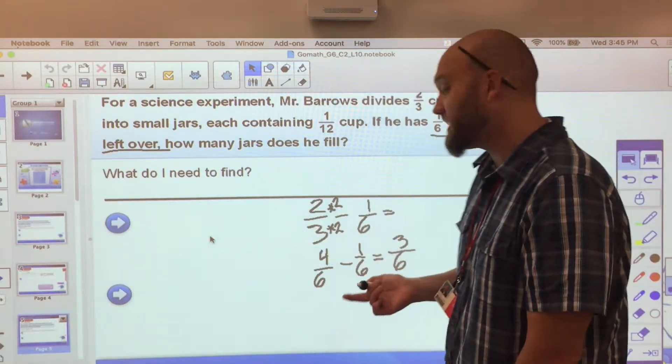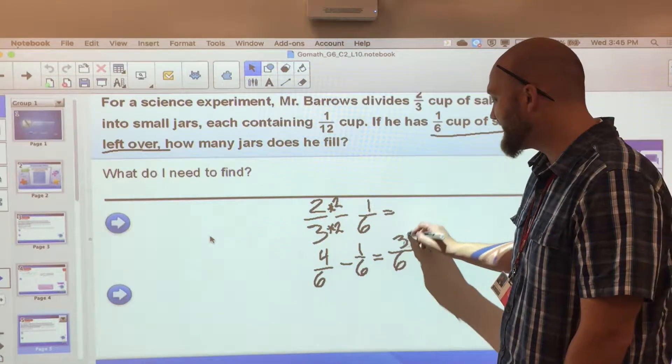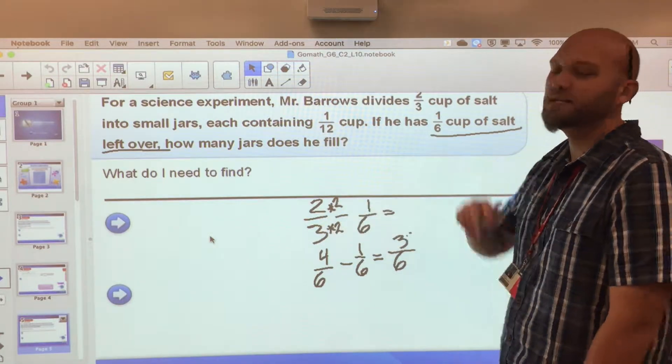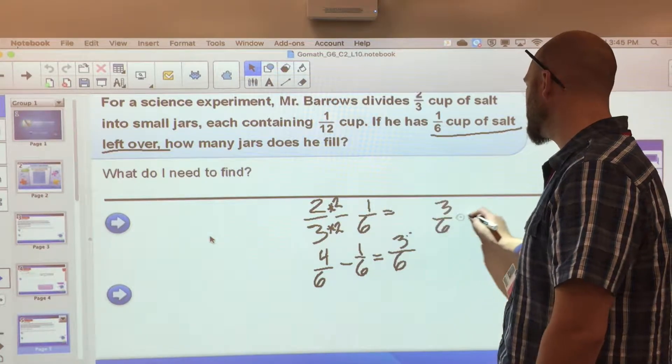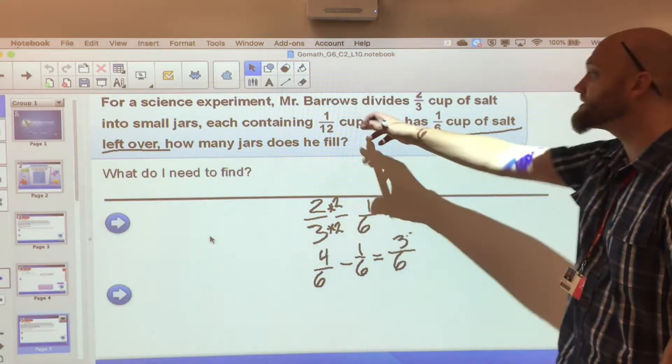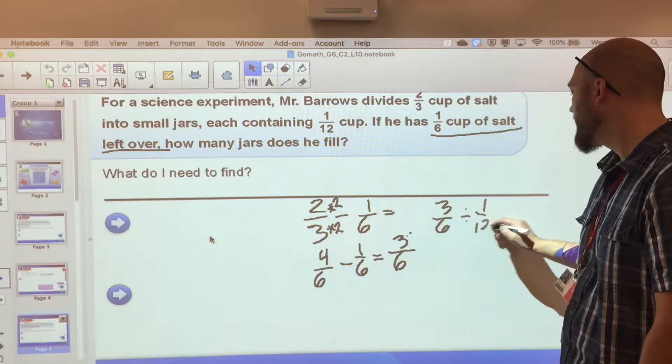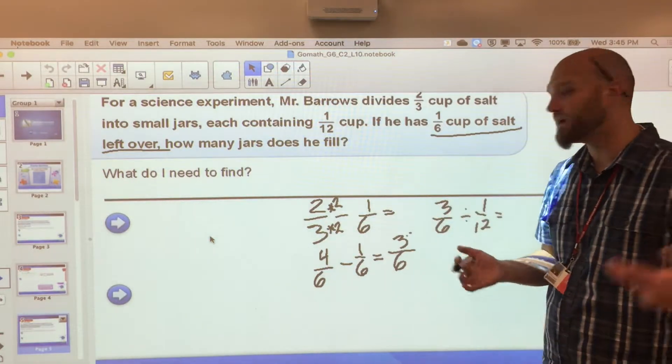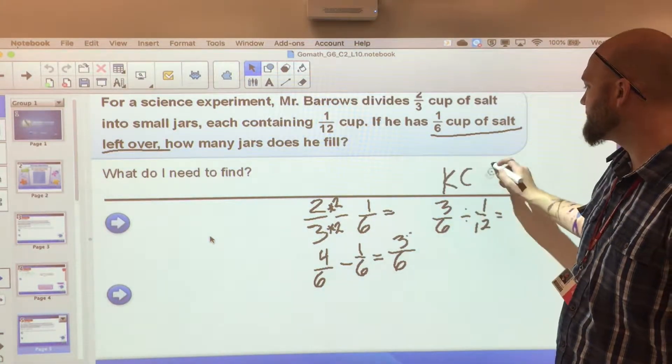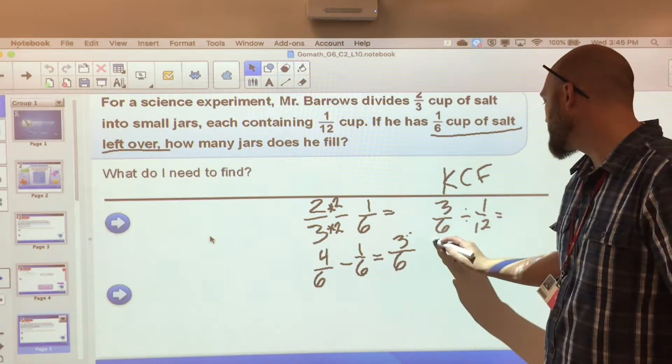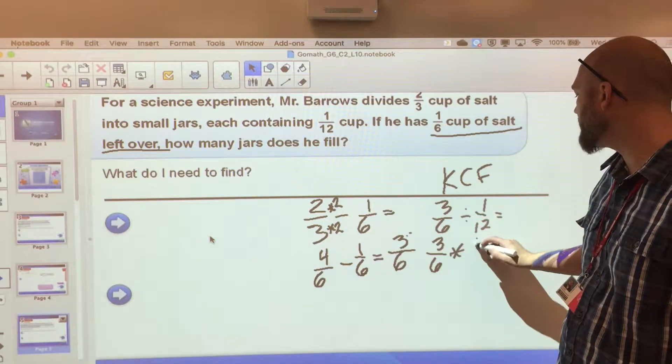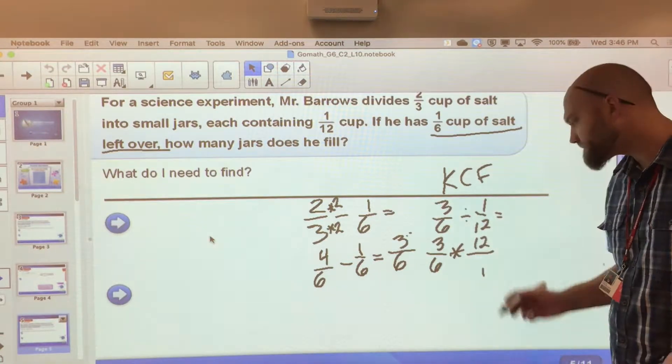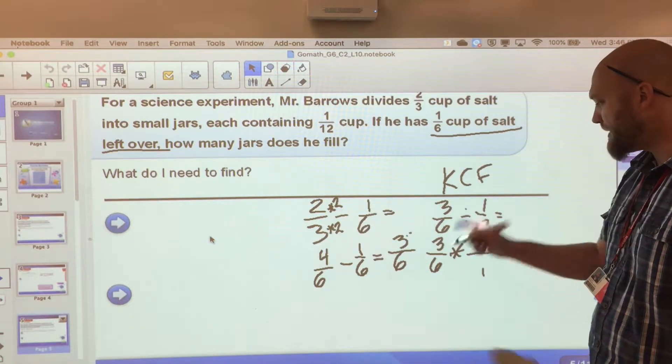Three-sixths I've distributed into jars. Now I know that I'm going to take this part and divide it up: three-sixths divided into jars that are one-twelfth of a cup, and I need to know how many jars I have here. Well, division of fractions: I'm going to keep it, change it, flip it. I'm going to keep three-sixths, I'm going to change division to multiplication, and I'm going to flip one-twelfth to twelve over one.